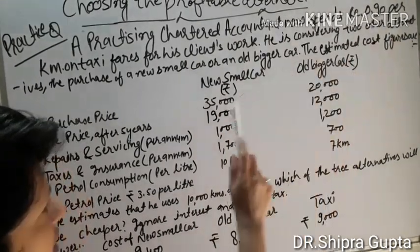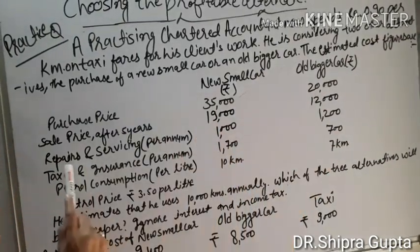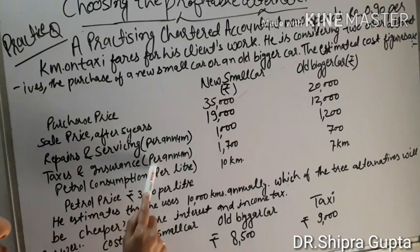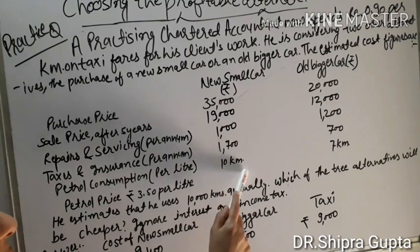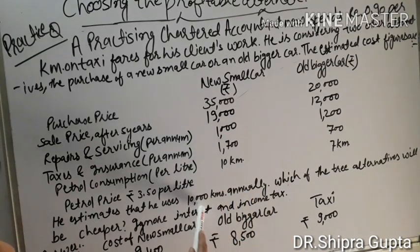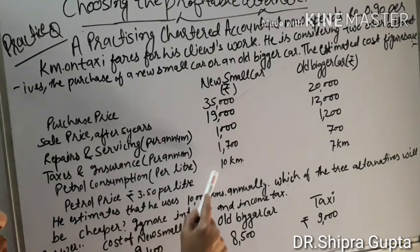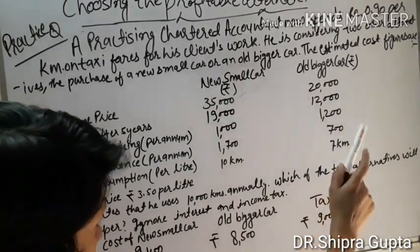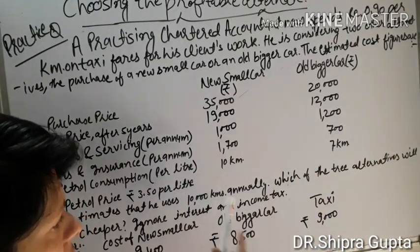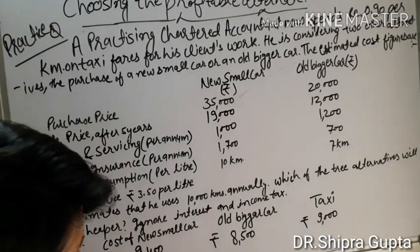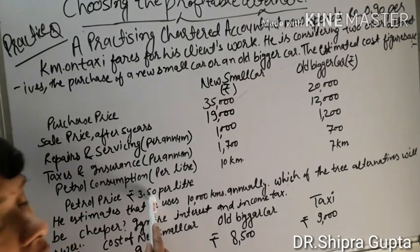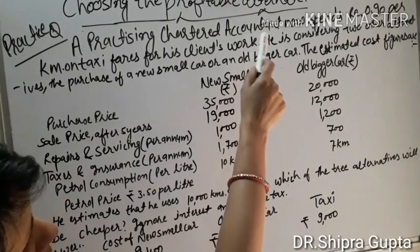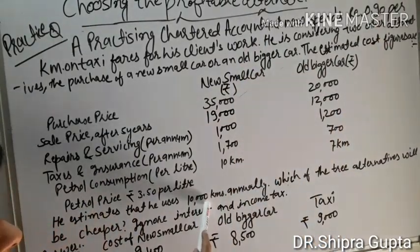Then you find the total cost across three alternatives. For the new small car, include: depreciation, repairs and servicing, taxes and insurance, and petrol. Petrol for the new small car: 10 km per liter means for 10,000 km you need 1,000 liters, multiplied by ₹3.50. For the old bigger car: 7 km per liter, so calculate liters for 10,000 km and multiply by ₹3.50. For the rental-based taxi: ₹0.90 multiplied by 10,000 km.